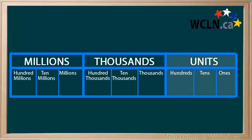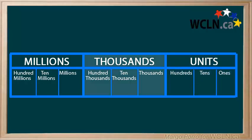The ones, tens, and hundreds make up the units period. To the left are the thousands. There are thousands, ten thousands, and hundred thousands.